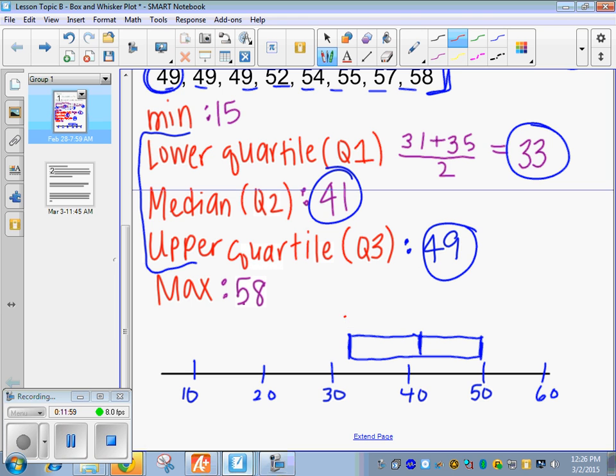Alright, and then we've got 41 in the middle, and so I'm going to draw another line here. That's the median. And then I've got 49 right here, and we draw a box with those three numbers. And just so you guys know what these are, I want you to label this Q1, Q2, Q3, also known as the lower quartile, the median, and the upper quartile. So those make the box, and then the min and the max make the whiskers. So I'm going to go here, down to 15. And we're going to draw our line here, out to 58 for the max.